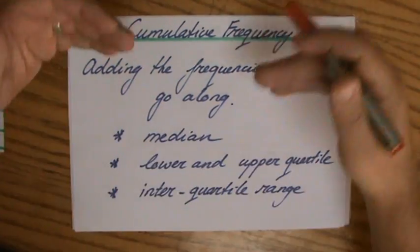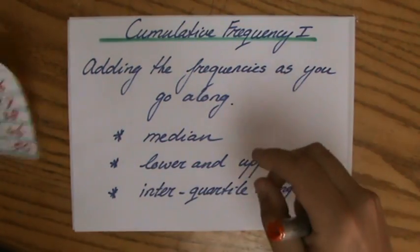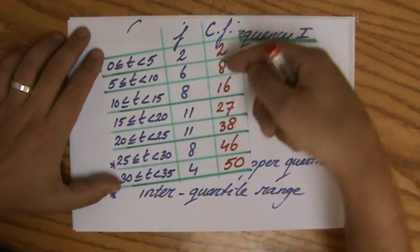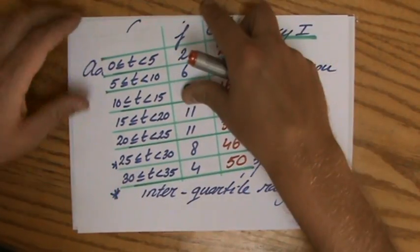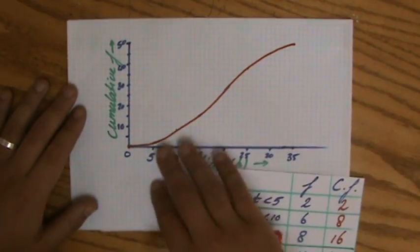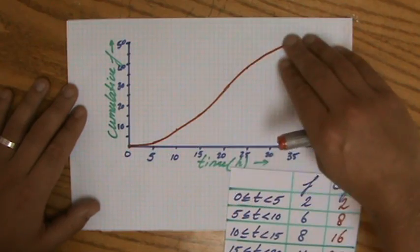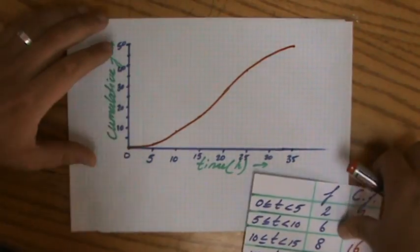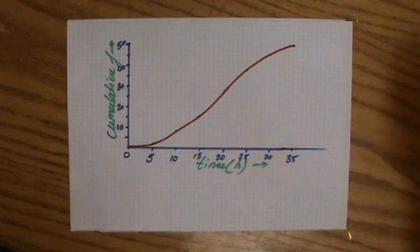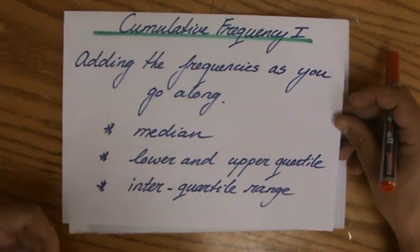Welcome back. This is part two, still talking about cumulative frequency. I had a frequency table, found the cumulative frequency by adding up the frequencies, and in my previous video I plotted that graph. With cumulative frequency, there's always some sort of S-curve visible in your graph.